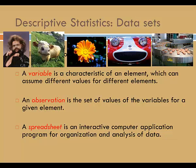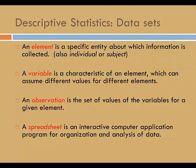A variable is a characteristic of an element which can assume different values for different elements. What are some of the characteristics of interest to the researcher? Maybe things like height, weight, stem length, color, speed, number of donuts — these are examples of variables. An observation is the set of values of the variables for a given element. Since an observation is a set, we'll use set notation and list the variable values separated by commas inside brackets.